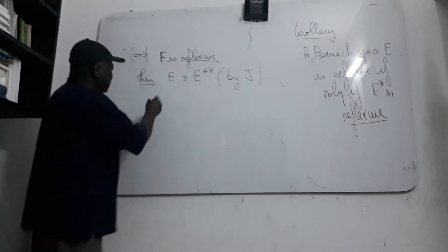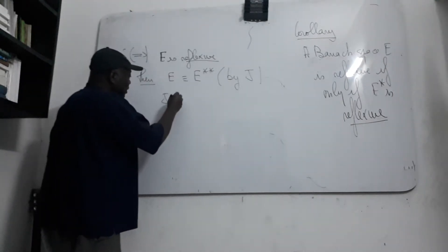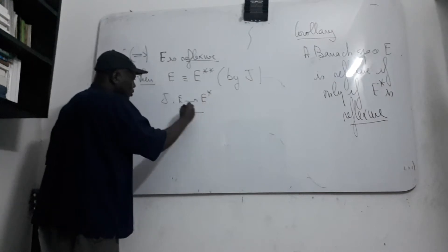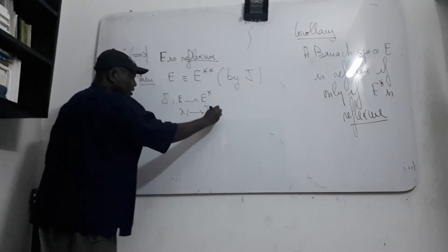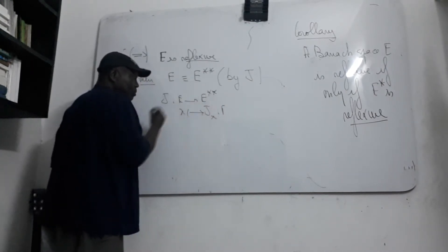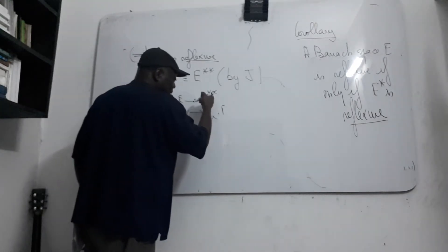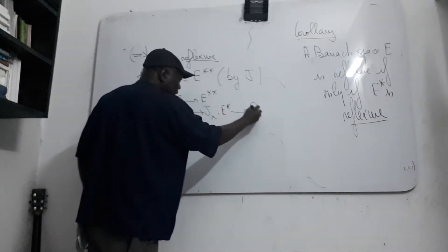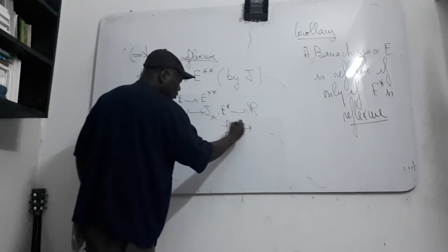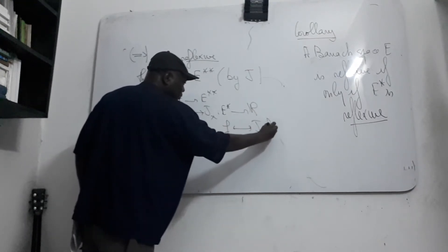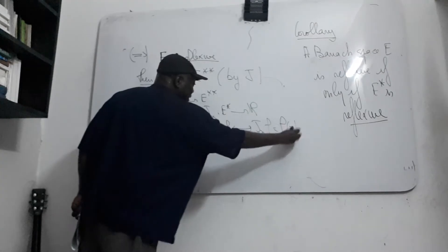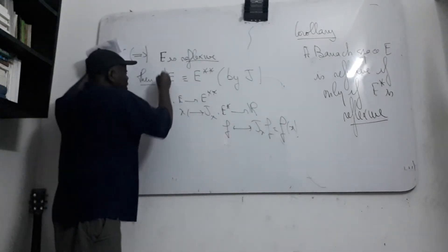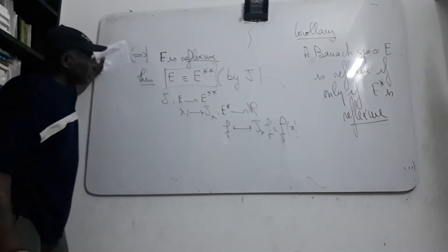G acts such that for all x in E, G(x) maps from E* to R, and for all f in E*, you have G(x) of f equal to f(x). This is a reminder — you know it already. So you consider G as the canonical map from E to E**.